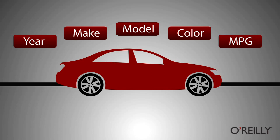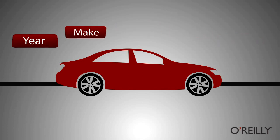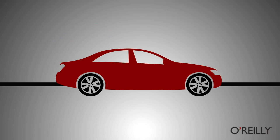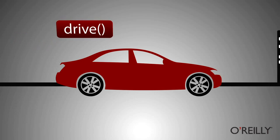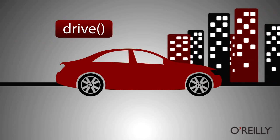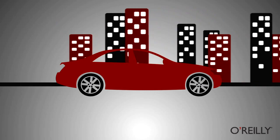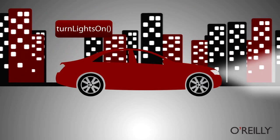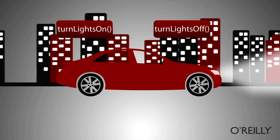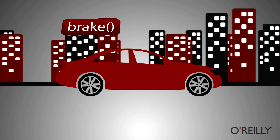But in addition to just the properties, an object can have behavior. For instance, you can tell a car to drive, and then the car knows how to do that. You don't have to worry about how it drives, it just drives. Or you can tell the car to turn the lights on, or turn the lights off, or to brake.